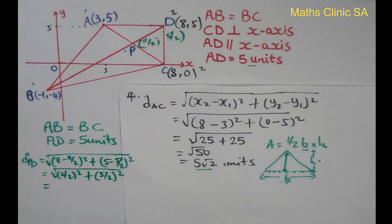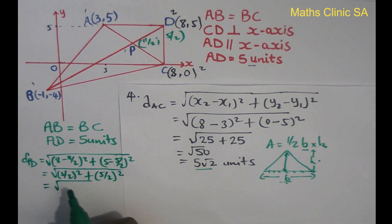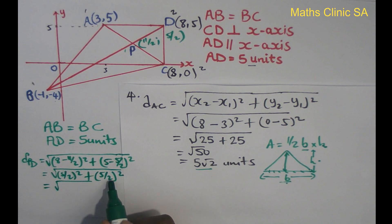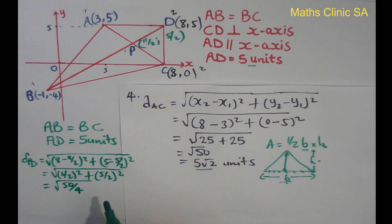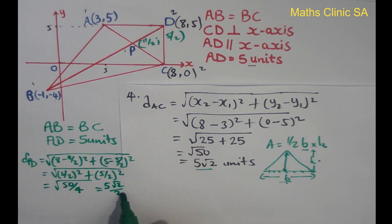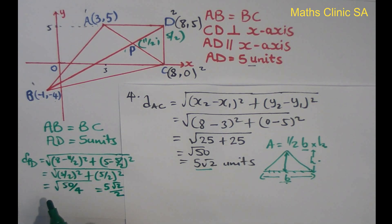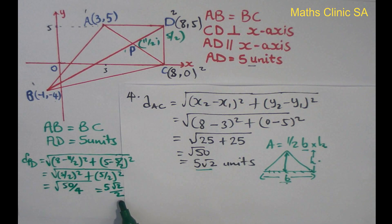5 over 2 squared equals 25 over 4. So it's 25 over 4 plus 25 over 4, giving 50 over 4. Therefore the length of PD is 5 root 2 over 2.